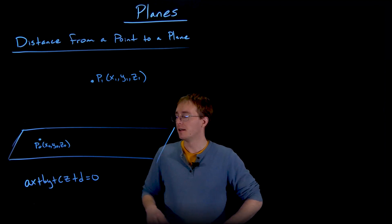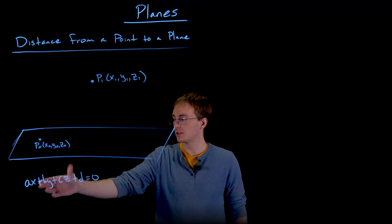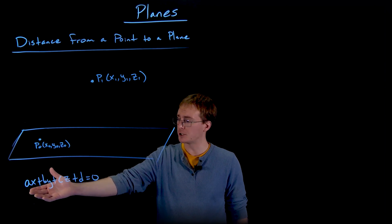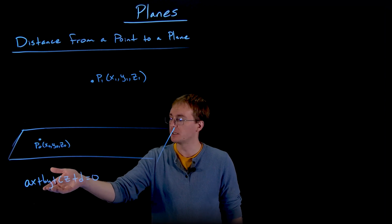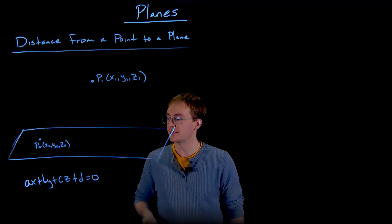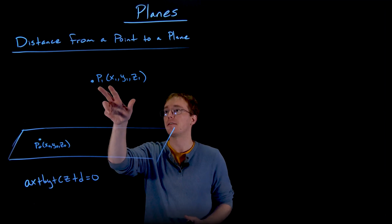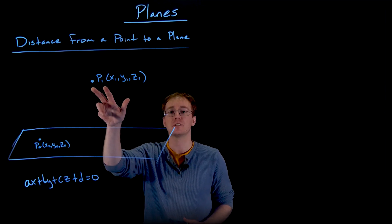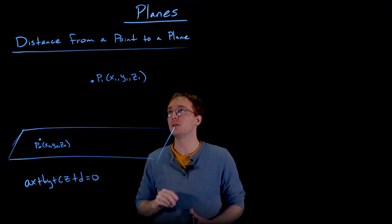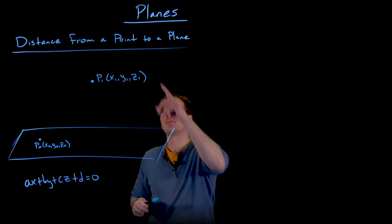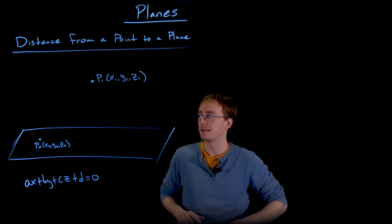So to get started we have the scalar equation for our plane, and let's suppose that the scalar equation of our plane is written in this general format: AX plus BY plus CZ plus D is equal to zero. We also have a point of interest P1 which has coordinates of X1, Y1, and Z1, and this is the point that we're trying to find how far away is from our plane.